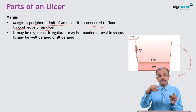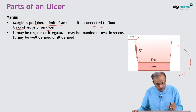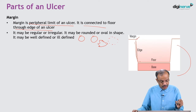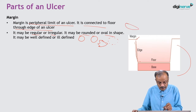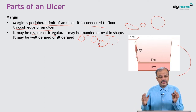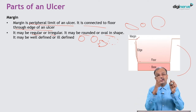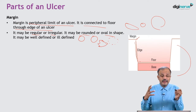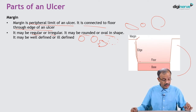When you explain the margin clinically, it may be well-defined and very clear, or ill-defined. The margin may be regular or irregular, and the shape may be rounded or oval depending on the ulcer. So when describing a margin, you must use these technical terms: regular/well-defined, regular/ill-defined, irregular/well-defined, or irregular/ill-defined. You must use these specific technical words.